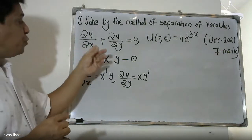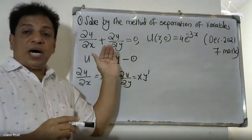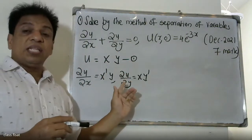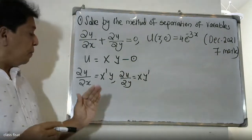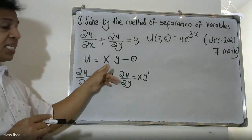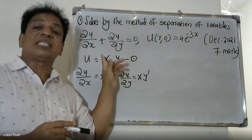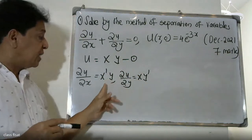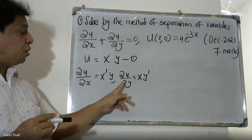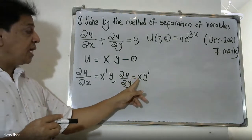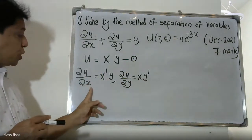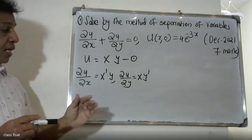So the partial derivatives are: ∂u/∂x = X'Y, and ∂u/∂y = XY'. Now we have both partial derivatives of u = XY.